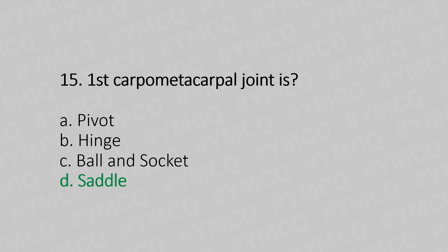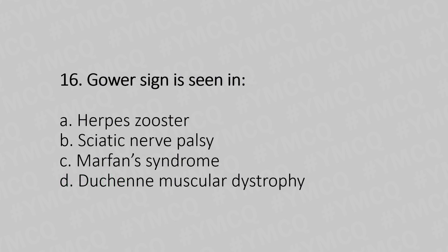Sixteenth question: Gower's sign is seen in — Option A: herpes zoster. Option B: sciatic nerve palsy. Option C: Marfan syndrome. Option D: Duchenne muscular dystrophy. The answer is Option D, Duchenne muscular dystrophy.